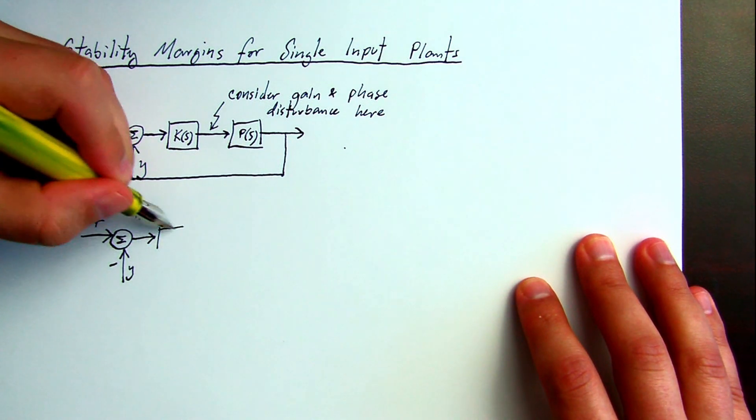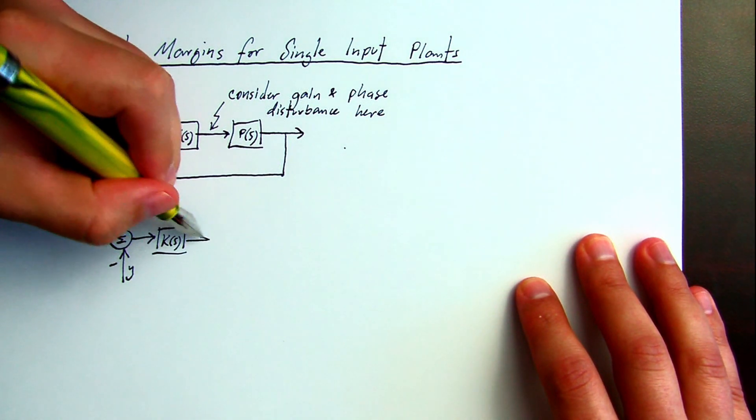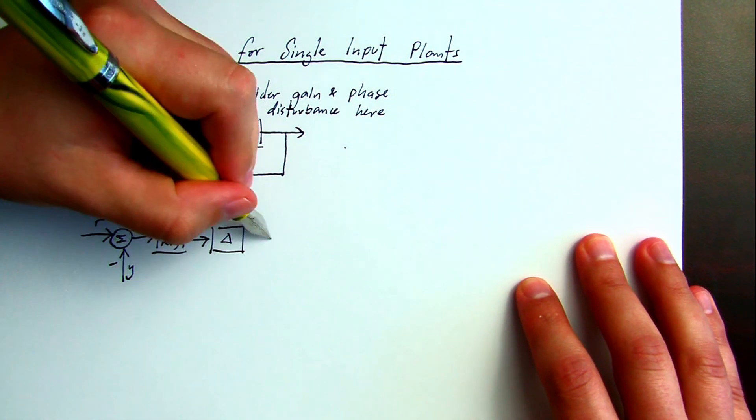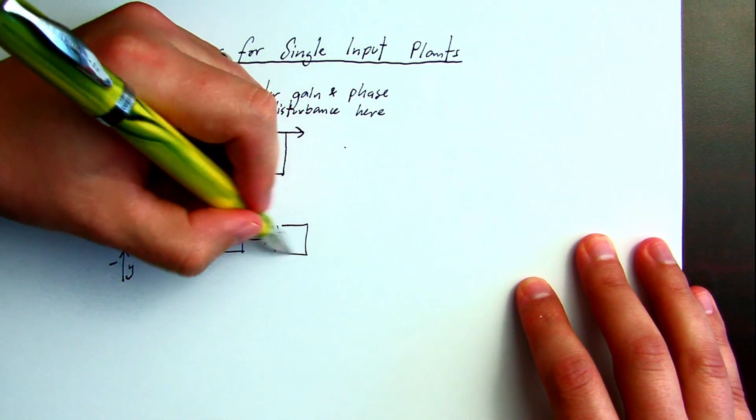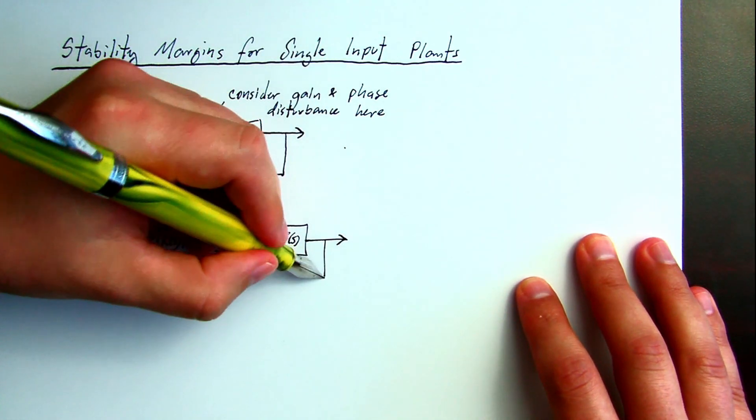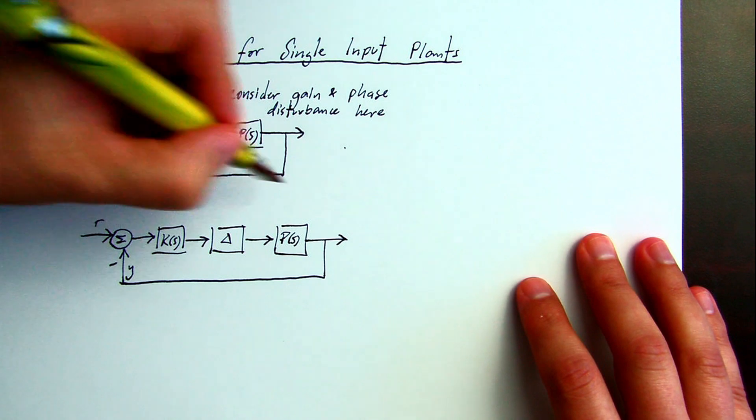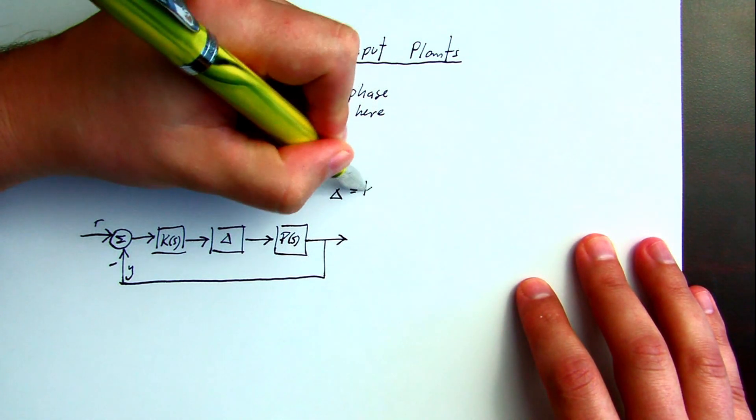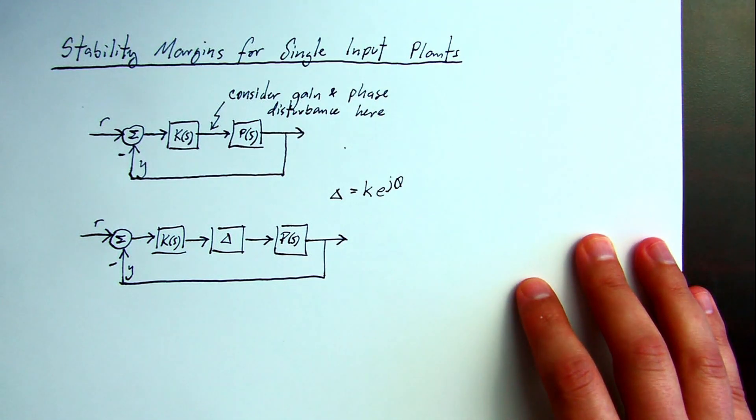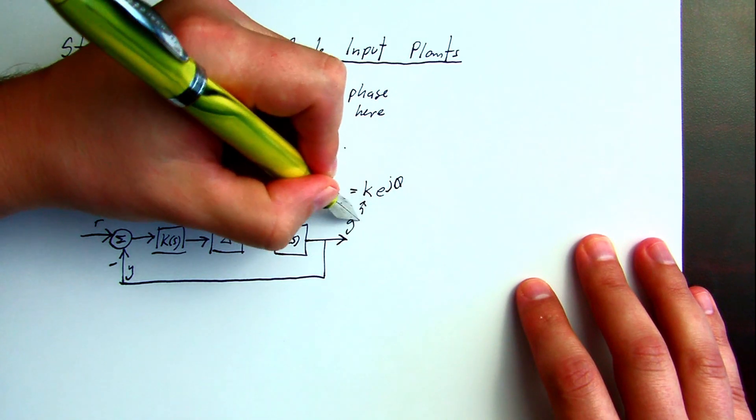We can represent this disturbance with a delta variable, where delta is a gain multiplied by a phase term.